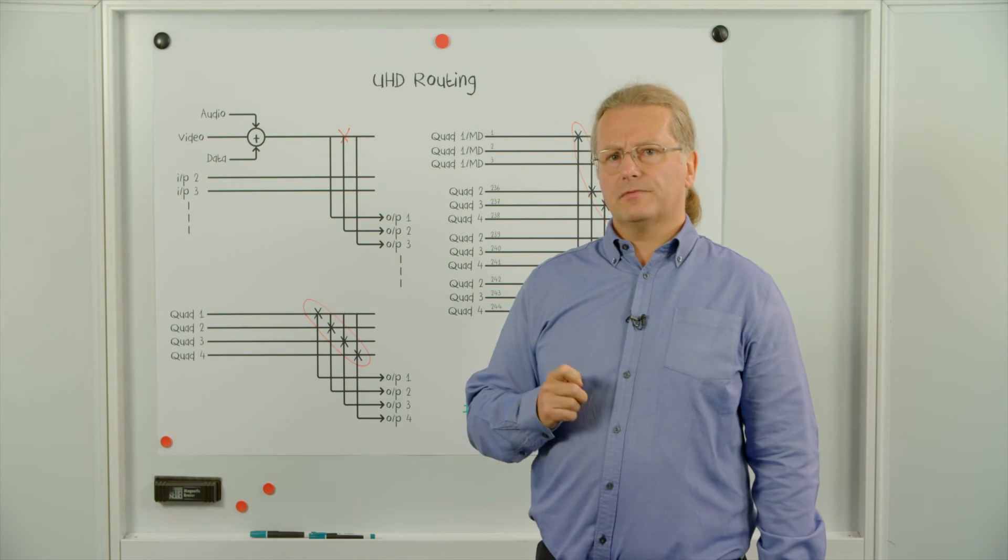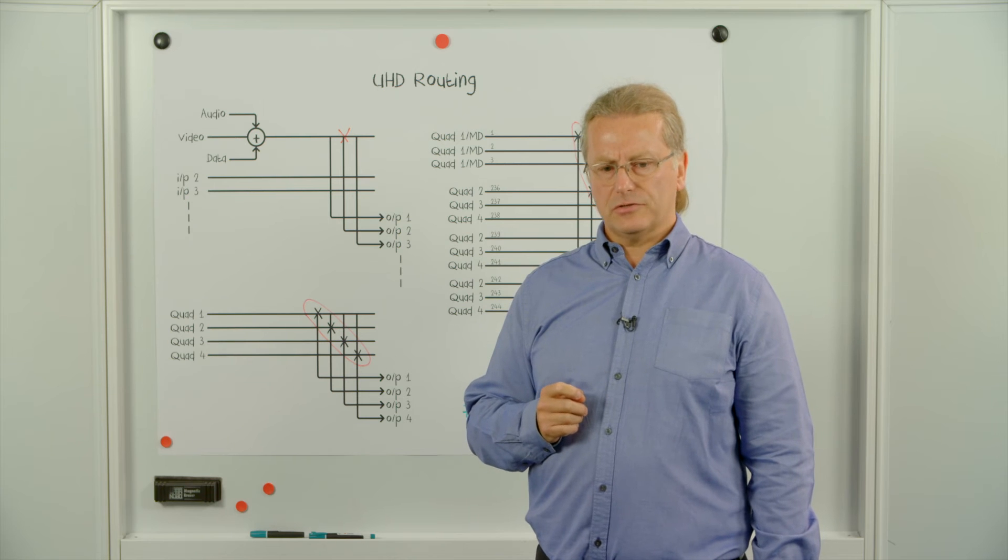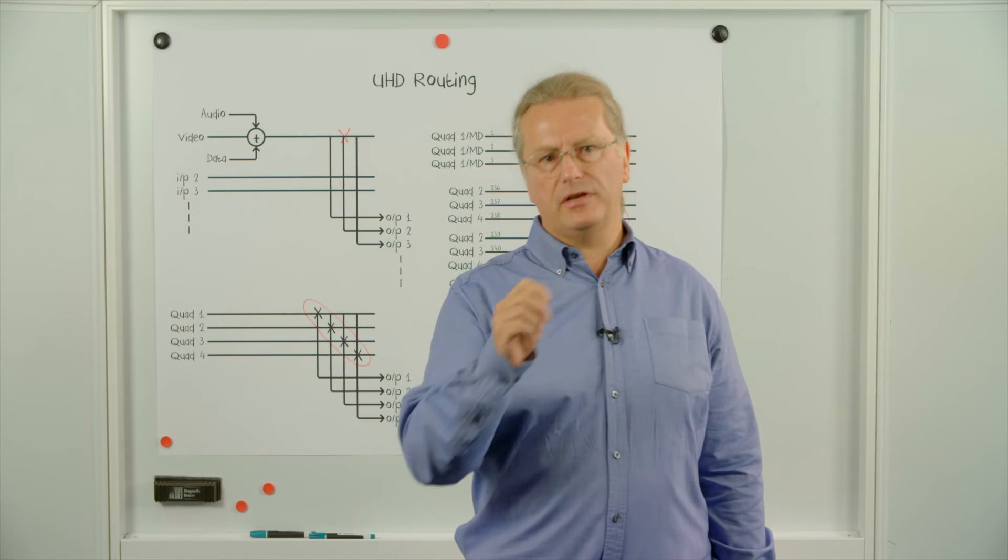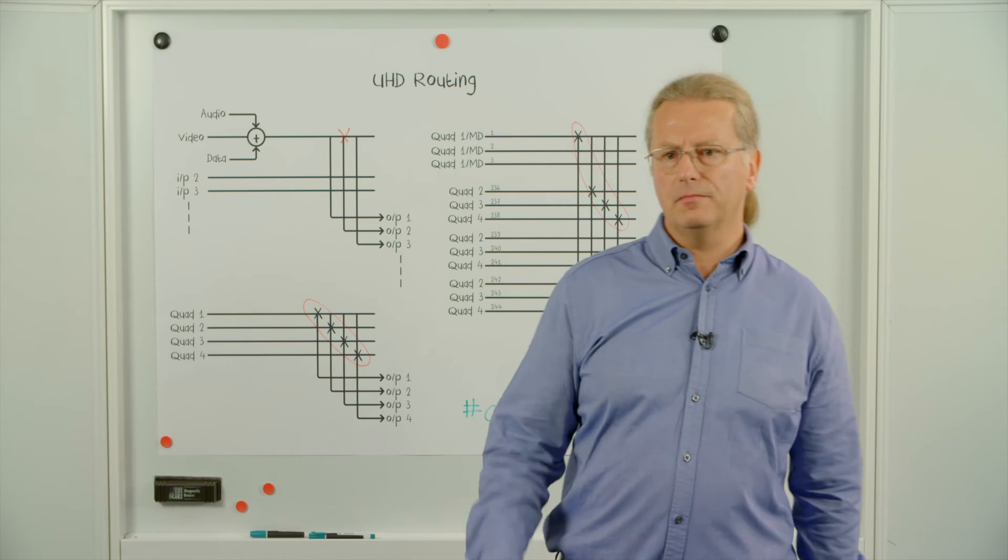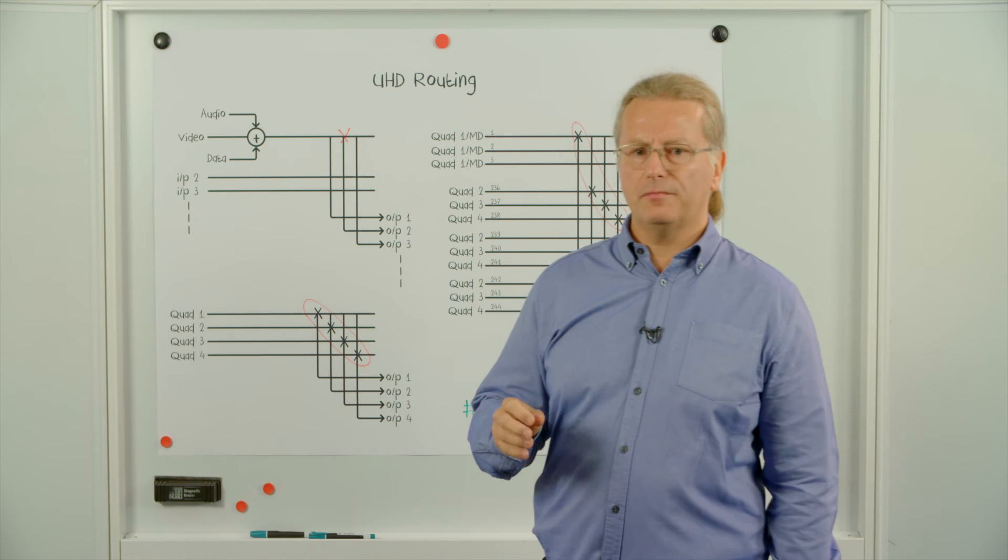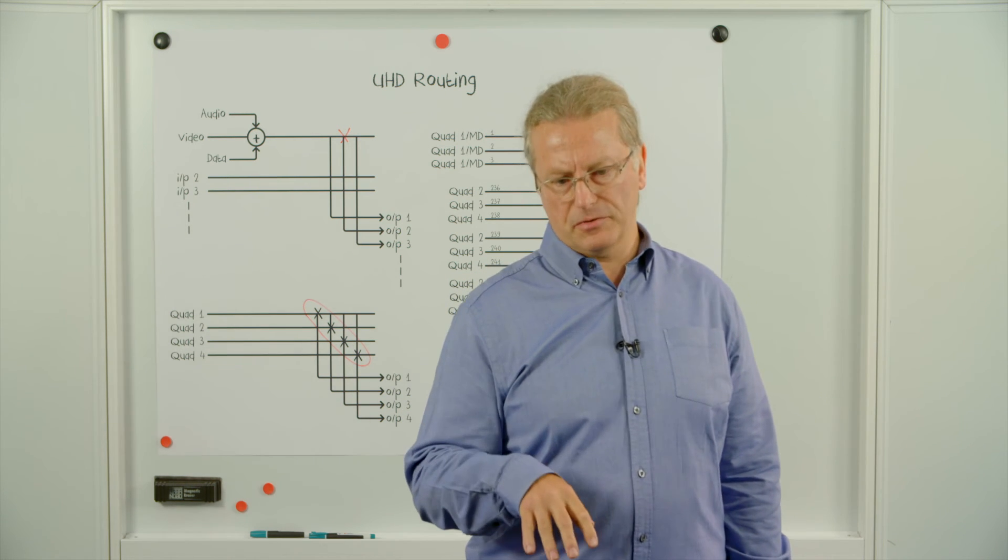Now, do you need to use this complex technology for all the destinations on the router? I would suggest you don't. The only destinations that you really need to ensure switch at the same time are those that are seen by the viewer. The ECUT output, for example, or perhaps those outputs of the router which feed into the production switcher.